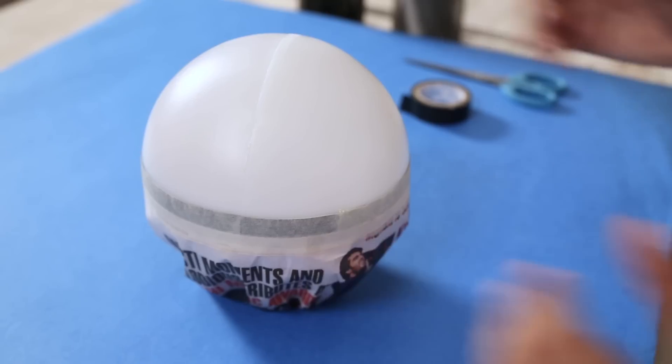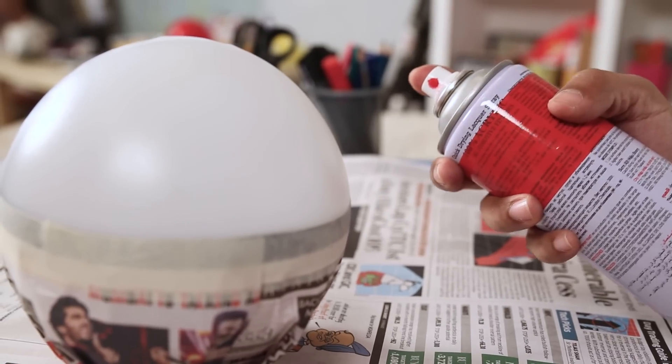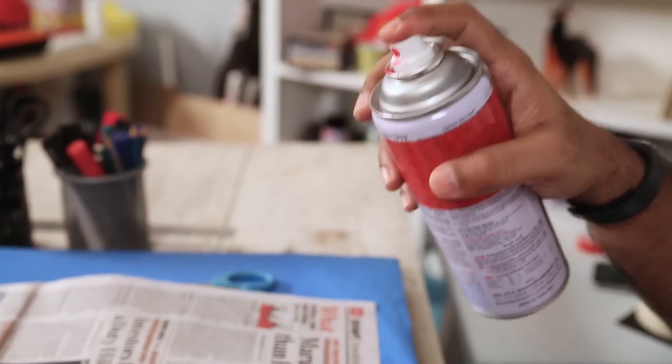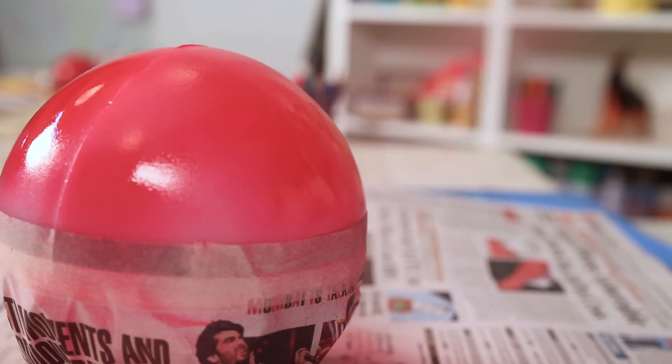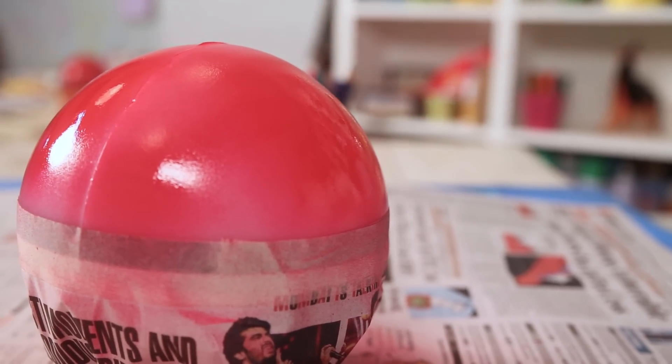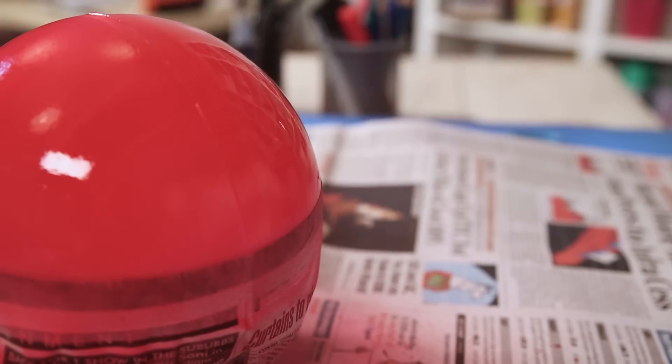Okay, this is ready for spray paint. Now to paint this, I'm using this bright red colour. When you're using a spray can, make sure there is enough distance, about 6 to 8 inches between your subject and the spray can.